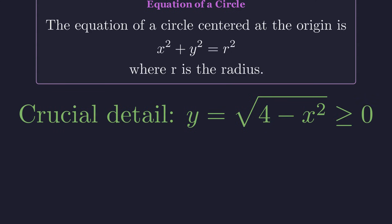But wait! There's an important detail. Our original function uses the positive square root, which means y is always non-negative. So we're not looking at a full circle, just the upper half. A semicircle.